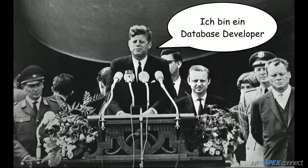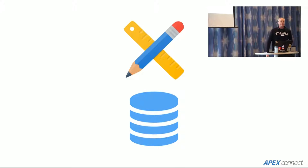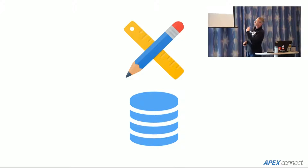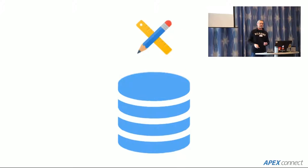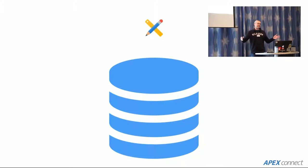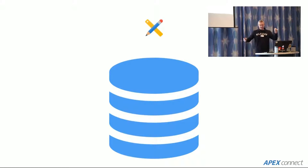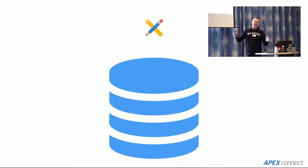That's my German reference — I'm a database developer — and that's about it. Apex is all about the database, right? I think it should be more like this: a big fat database with a real thin layer of veneer called Apex. After a while if Apex is out of the picture, we move to JET, ADF, or whatever. I think everything should be in the database.